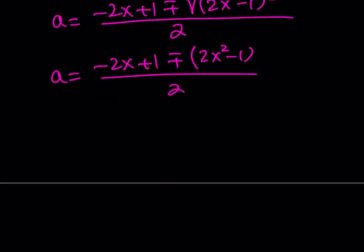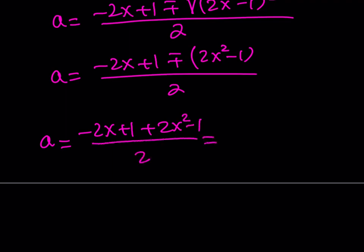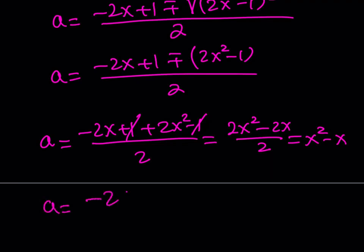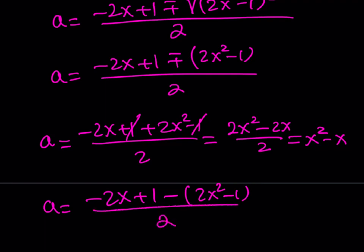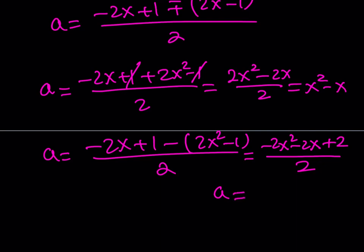Now I split into two cases. Using the plus sign: negative 2x plus 1 plus 2x squared minus 1, all over 2. The ones cancel, giving 2x squared minus 2x over 2, which equals x squared minus x. That's one value of a. For the minus sign: negative 2x plus 1 minus (2x squared minus 1) over 2, giving negative 2x squared minus 2x plus 2, over 2, which equals negative x squared minus x plus 1. So I have two a-values.